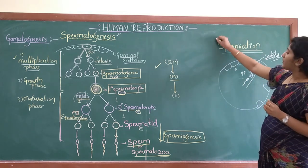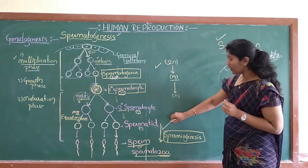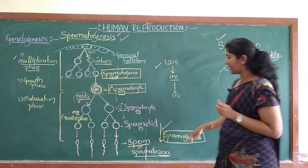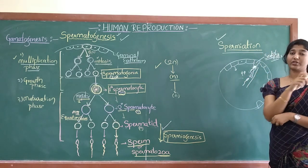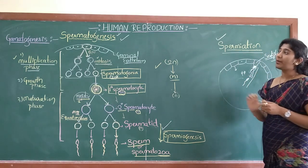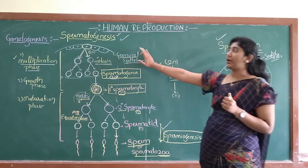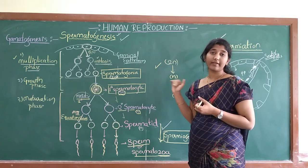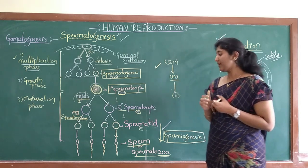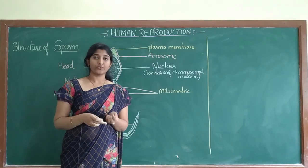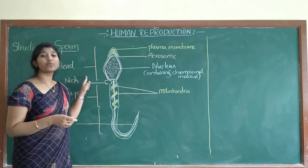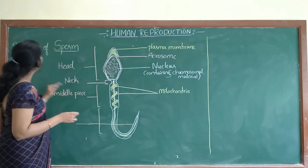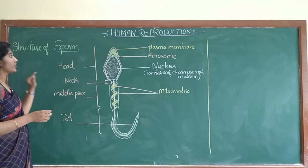So spermiation, spermiogenesis, and spermatogenesis — these three definitions are important. Here we complete the process of spermatogenesis under gametogenesis. We will now study the structure of sperm; this diagram is very important for 5-mark questions.